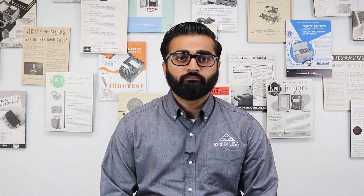According to IEC 60601-1 standard, touch current is defined as current that flows from an enclosure of an electrical device to earth via an external path. Current can also flow from one enclosure point to another enclosure point. Touch current is designed to measure the current that a human body would be exposed to in the event of a fault occurring within an electrical device. In order to measure touch current, the measuring device labeled MD in this image needs to be in a proper position. As seen in this image, the MD makes contact with an enclosure point while standing on earth ground.